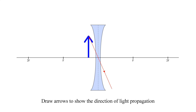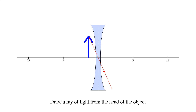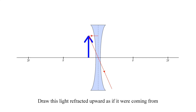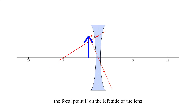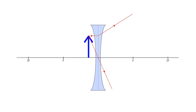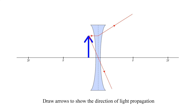Draw arrows to show the direction of light propagation. Draw a ray of light from the head of the object parallel to the principal axis to the lens. Draw this light refracted upwards, as if it were coming from the focal point, F, on the left side of the lens. Draw arrows to show the direction of light propagation.